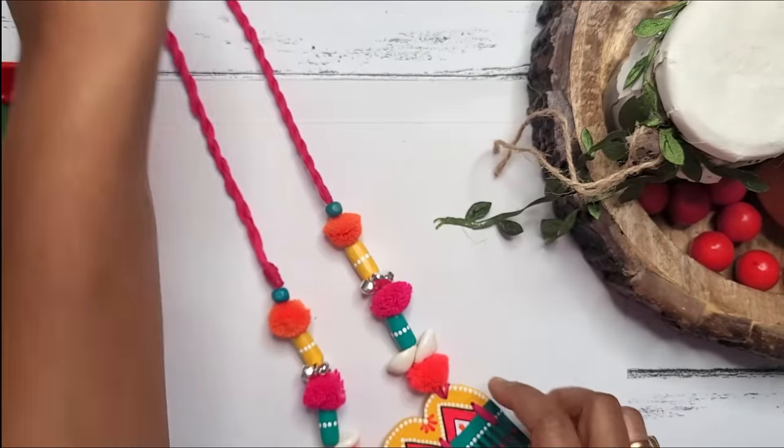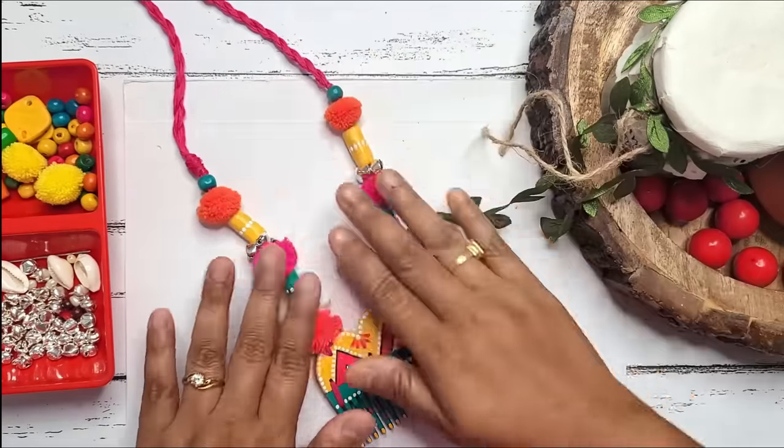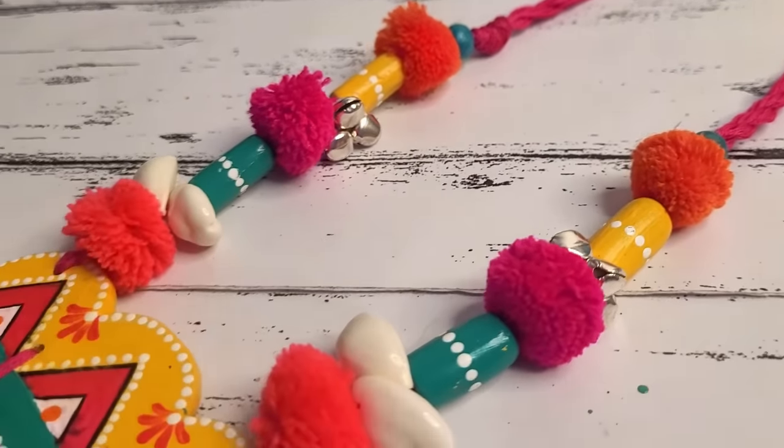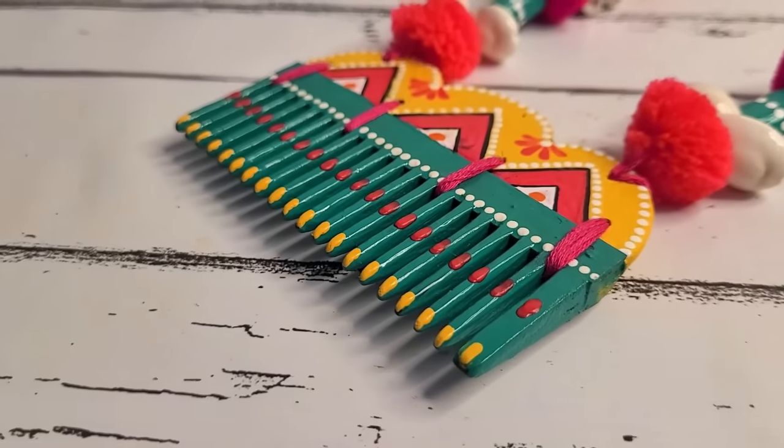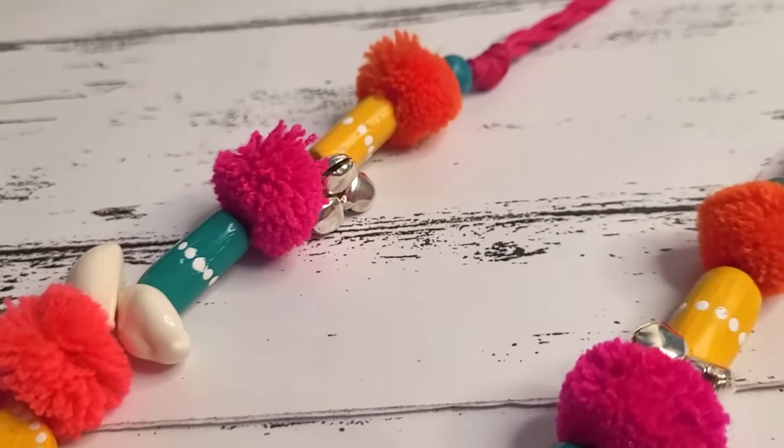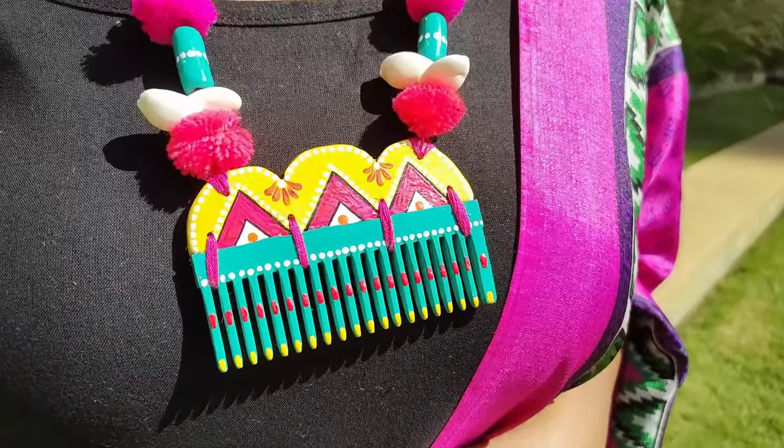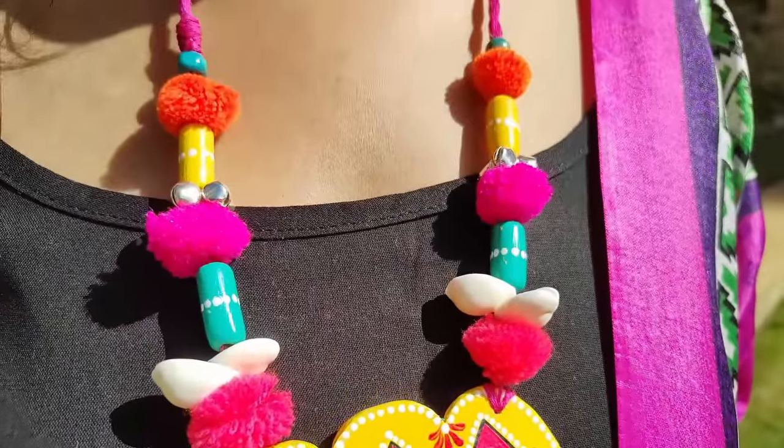And this is how our DIY comb necklace looks like. Isn't it looking pretty and gives off a boho vibe? You can pair this statement piece with anything like a sari, kurta, or western. It goes with everything basically.